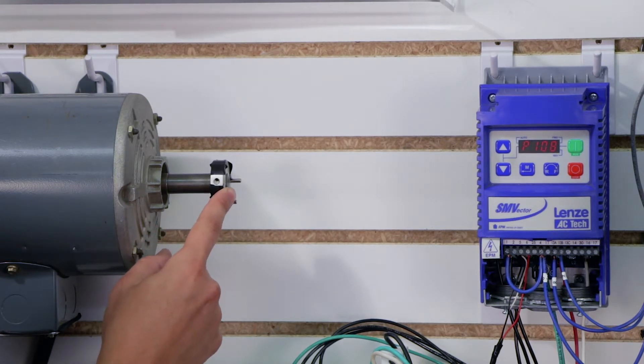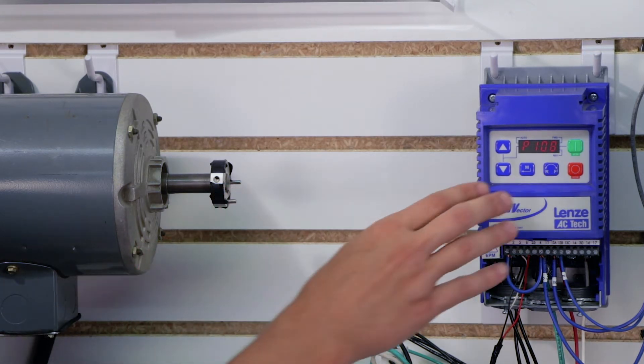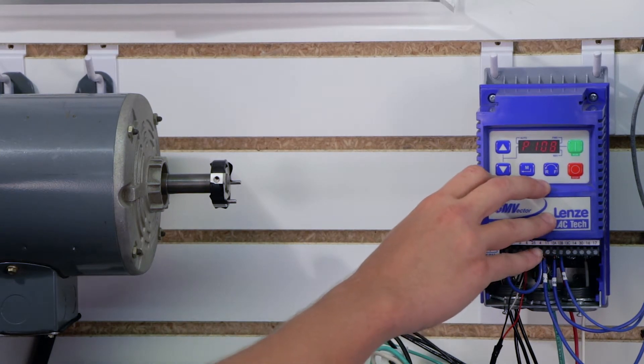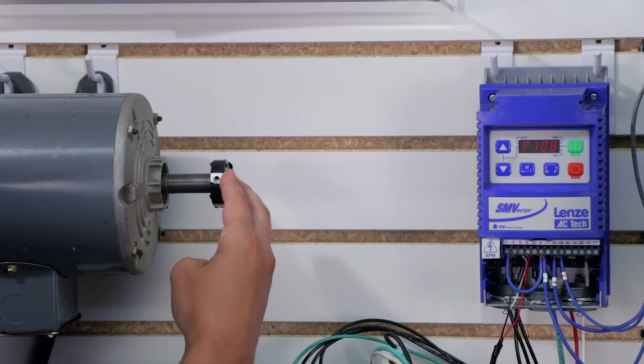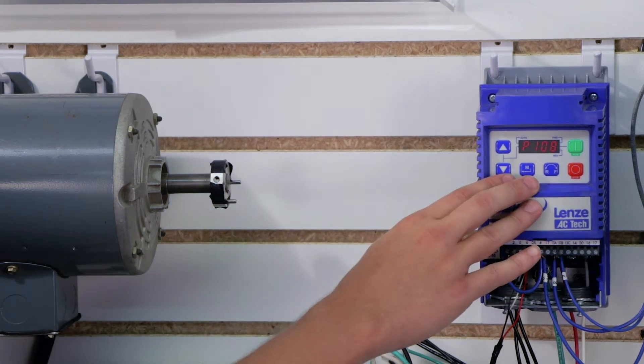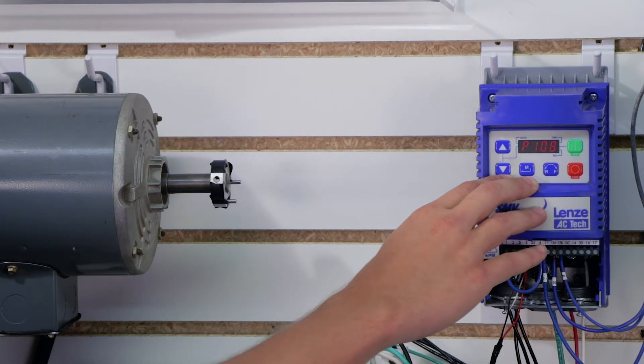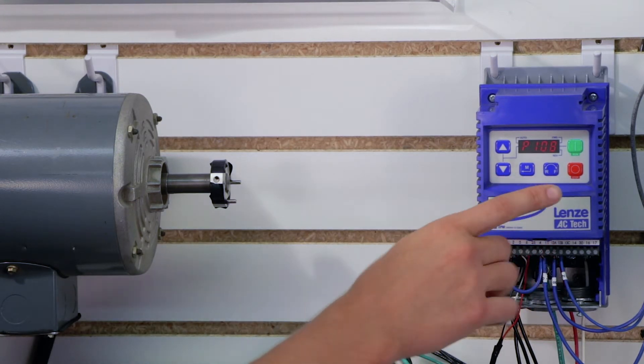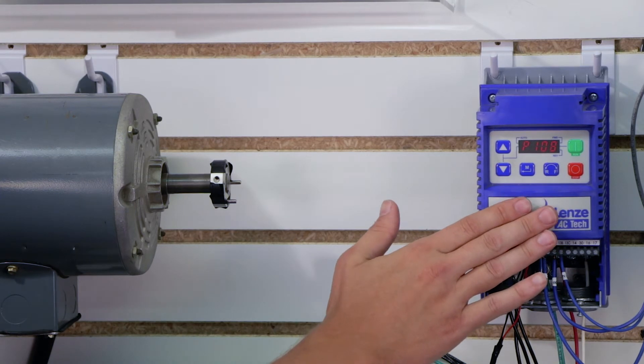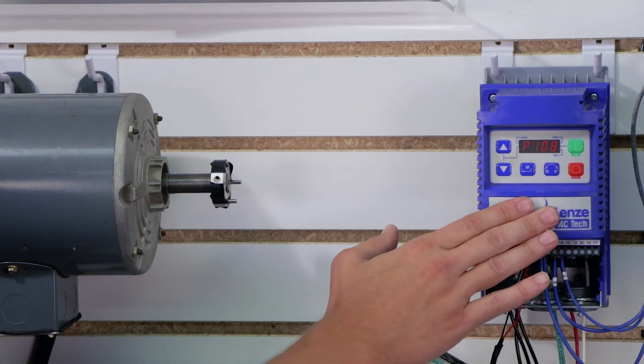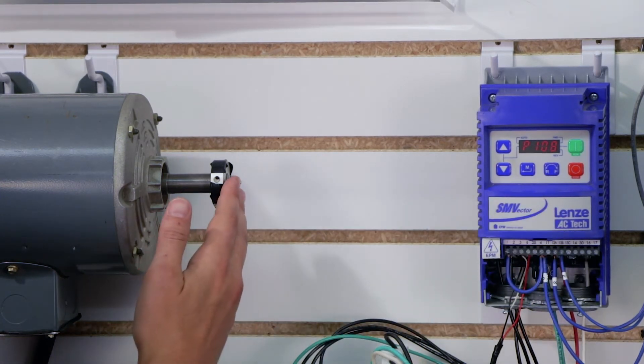Then I'm going to go over to my motor, and on my motor there's a name plate. On that name plate it says what the full load amps are. In my case it's 1.7, so I'm going to write down 1.7. Then we can plug those numbers into our formula on parameter 108, and it is right in the manual. That's our motor current which is 1.7 in my case divided by my drive current which is 2.4. In that case it comes out to be 0.67.